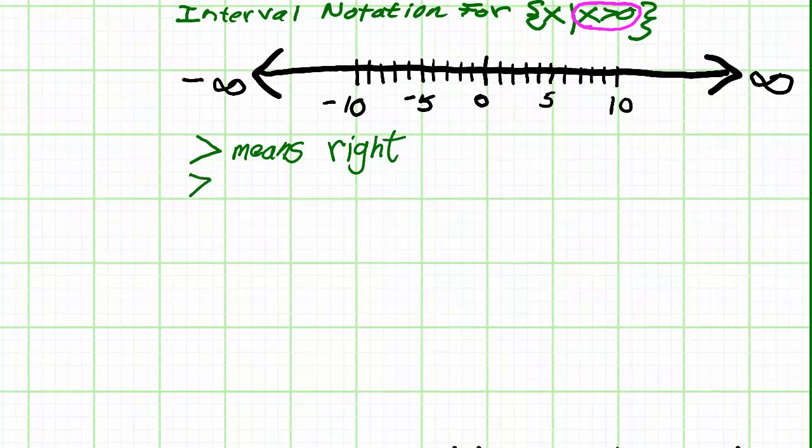Numbers to the right are greater than. Greater than zero means all of the numbers to the right of zero, or all the numbers greater than zero. The most operationally important part is to the right. To the right of zero.